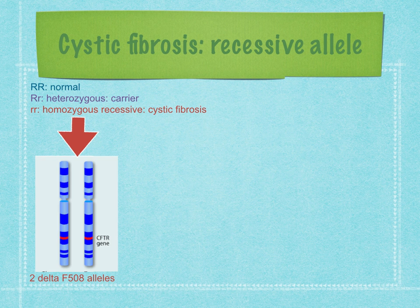Cystic fibrosis is caused by a recessive allele. If we represent the normal and recessive alleles by capital R and lowercase r respectively, a person with cystic fibrosis will have genotype lowercase r, lowercase r — meaning two Delta F508 alleles. A carrier without cystic fibrosis will have genotype capital R, lowercase r — one normal allele and one Delta F508 allele. A person without cystic fibrosis will be homozygous dominant: capital R, capital R.